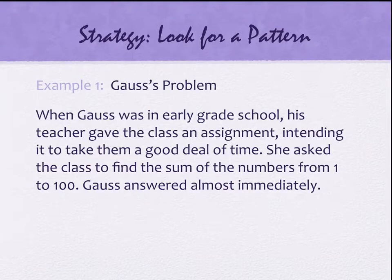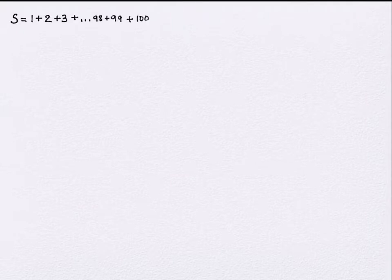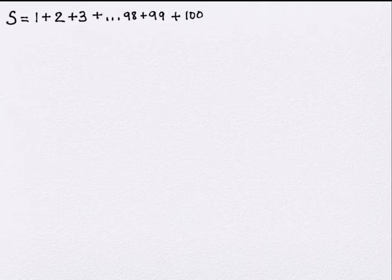We're going to do the problem that Gauss did: the sum of numbers from 1 to 100. First, write it out as S equals 1 plus 2 plus 3 dot dot dot 98 plus 99 plus 100. The goal is to find this sum efficiently without actually adding 1 plus 2 plus 3 plus 4 one by one. Then write the same thing in reverse order underneath: S equals 100 plus 99 plus 98 dot dot dot 3 plus 2 plus 1.